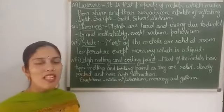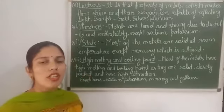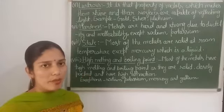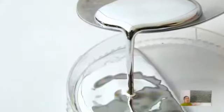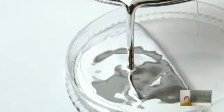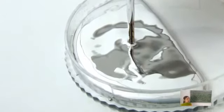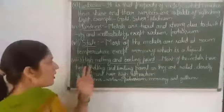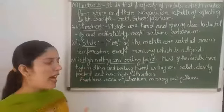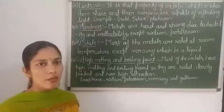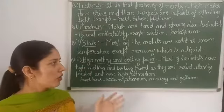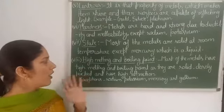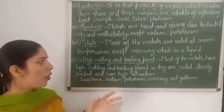The next property is state. Most of the metals are present in solid state at room temperature, except mercury, which is liquid at room temperature. The next property is high melting and boiling point. Metals are hard, so they have very high melting and boiling points.